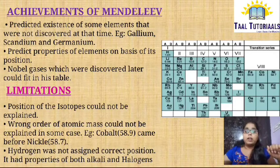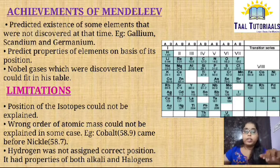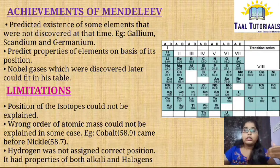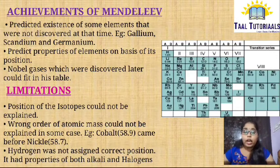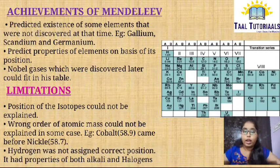Even Mendeleev's Periodic Table had some limitations. The position of isotopes could not be explained. Also, taking the example of Nickel and Cobalt: Cobalt has a higher atomic mass but comes before Nickel in the table, and the reason for this Mendeleev could not explain. Additionally, he could not give hydrogen a proper position, because hydrogen has the properties of both alkali metals and halogens.